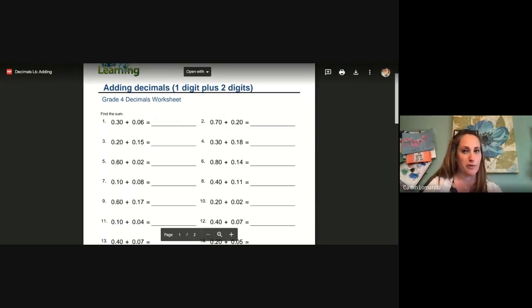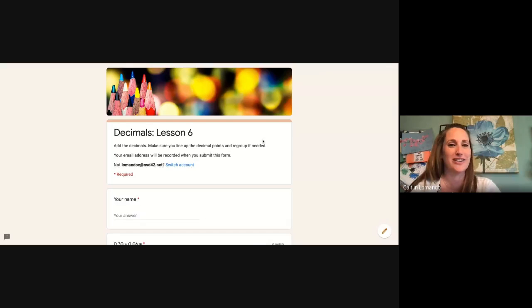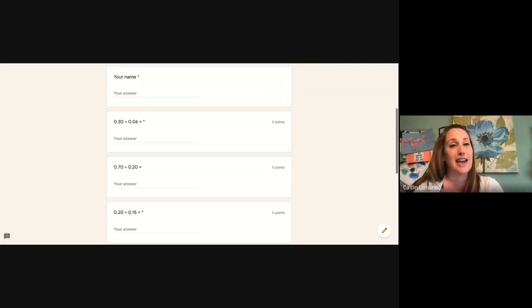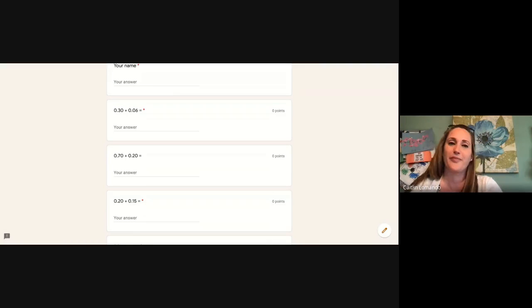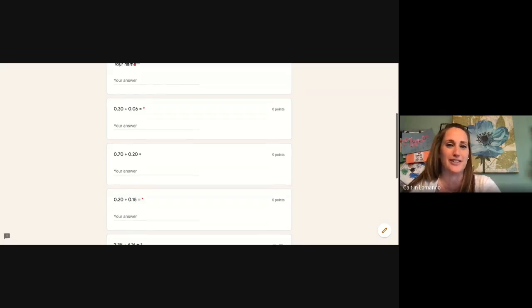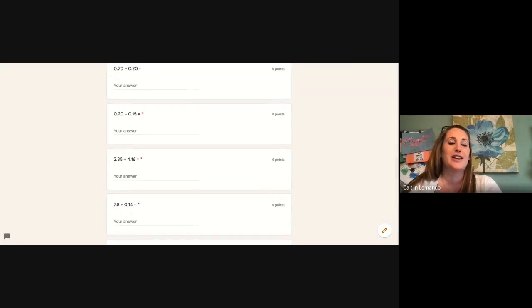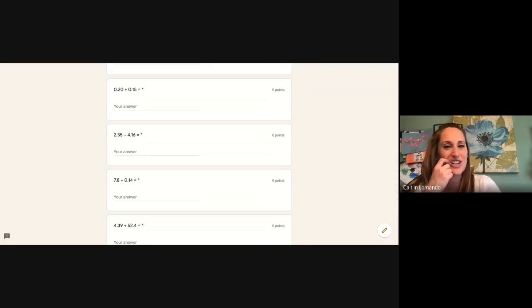Now, let's take a look at our form. Our form is going to be a little bit trickier, but not much. Adding decimals is just so easy. All right. So here is our decimals less than six form. Of course, you're going to put your name. Again, you're going to see everything written across. You want to write your answers vertically up and down. So we have 30 hundredths plus six hundredths. Our next one, 70 hundredths plus two hundredths. Number three, 20 hundredths plus 15 hundredths. Now it's getting a little trickier.